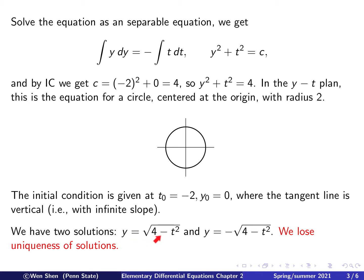And we can even write out the solutions explicitly. Moving the t squared to the right-hand side, then we have y squared equal 4 minus t squared. We can take the square root and we'll get the two branches. One is taking the positive square root, and the other is taking the negative square root. Both of them would satisfy the equation and the initial condition.